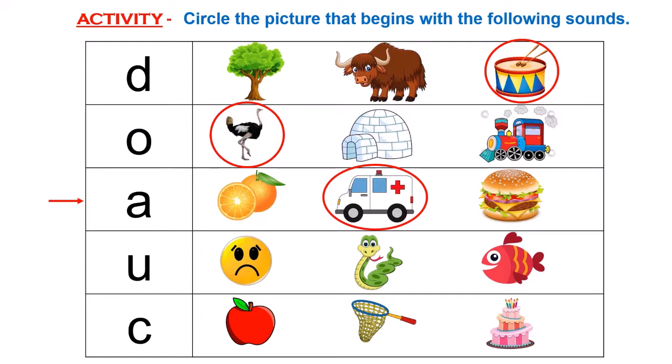Let us go to the next letter. This letter is U. And letter U says... Now, let us look at the pictures. The first picture is that — oh! — it is a sad face, but here we will say Upset. Next picture is that of a snake. And this is a fish. Fish, snake, upset.